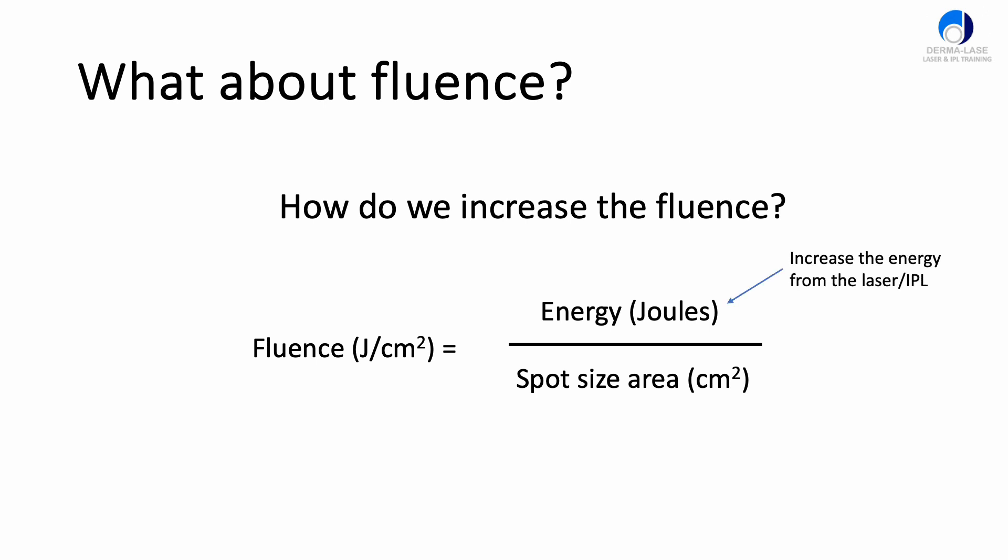Either we can increase the energy output from the laser or the IPL, just turn up the power or energy from the machine, or you can decrease the spot size on the skin surface. If you do both of these, you can create quite a wide range of fluences. It's quite straightforward, either increase the energy or change, either decrease or increase the spot size, depending on whether you want to increase or decrease the fluence.